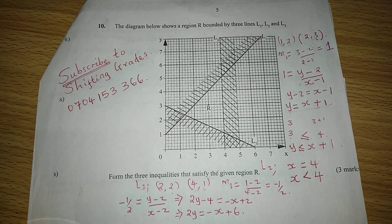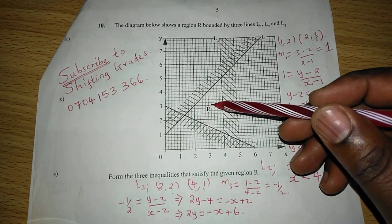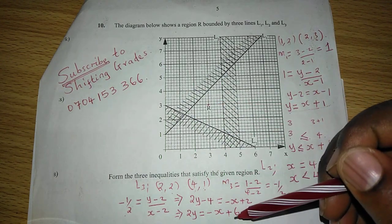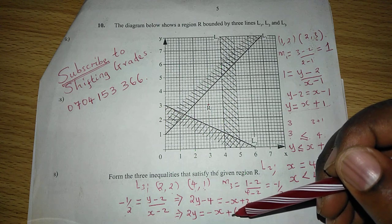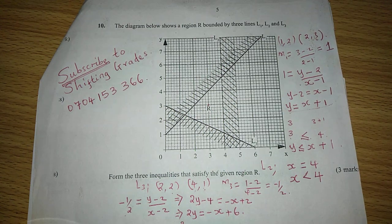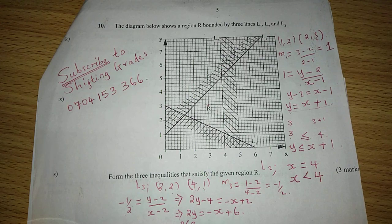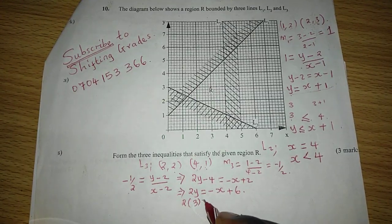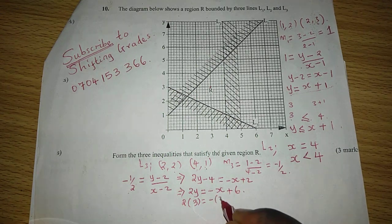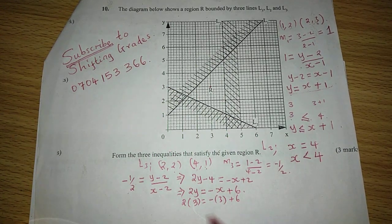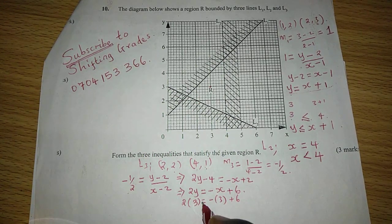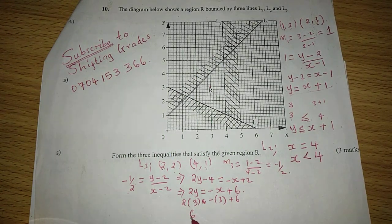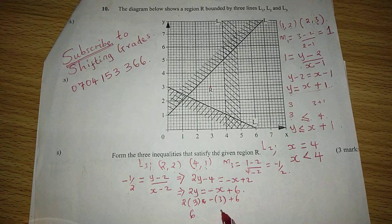We can again consider a coordinate in the required side. We can still consider 3, 3, and substitute it where we have X and Y respectively, such that 2 into 3 equals to negative 3 plus 6. This side will have 6, this other side will have 3.